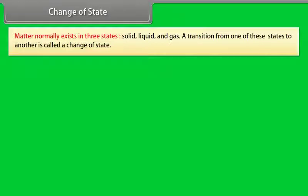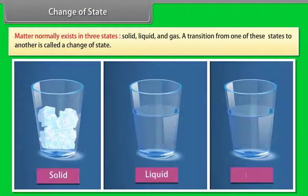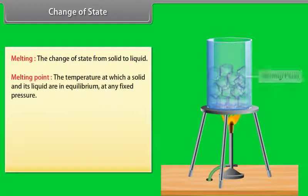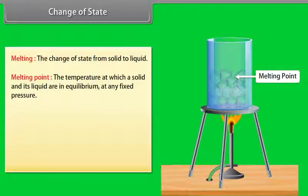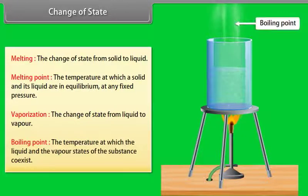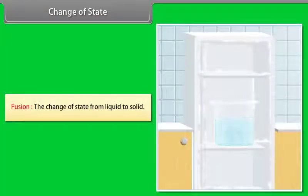Matter normally exists in three states: solid, liquid, and gas. A transition from one state to another is called a change of state. Melting is the change of state from solid to liquid. The melting point is the temperature at which a solid and its liquid are in equilibrium at any fixed pressure. Vaporization is the change of state from liquid to vapor. The boiling point is the temperature at which the liquid and vapor states of the substance coexist. Fusion is the change of state from liquid to solid.